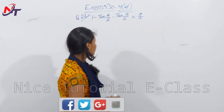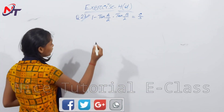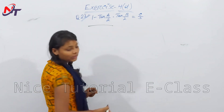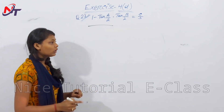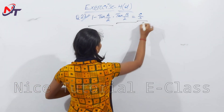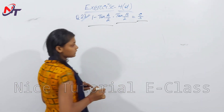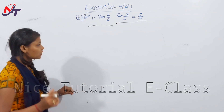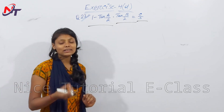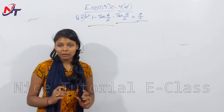Question number 23: prove that 1 - tan(A/2)·tan(B/2) = c/s. We need to show left-hand side equals right-hand side.